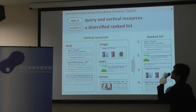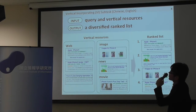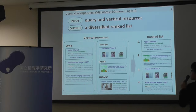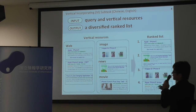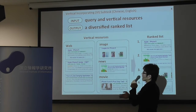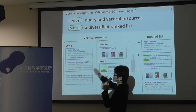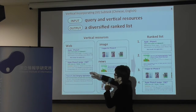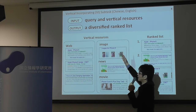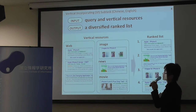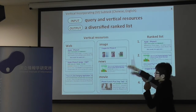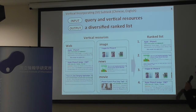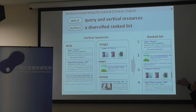In the second sub-task, called the vertical incorporating sub-task, given a query, we also provide a document corpus comprising several types of search engines — for example, web, image, news, and query. Given this information, the system has to produce a diversified search result.